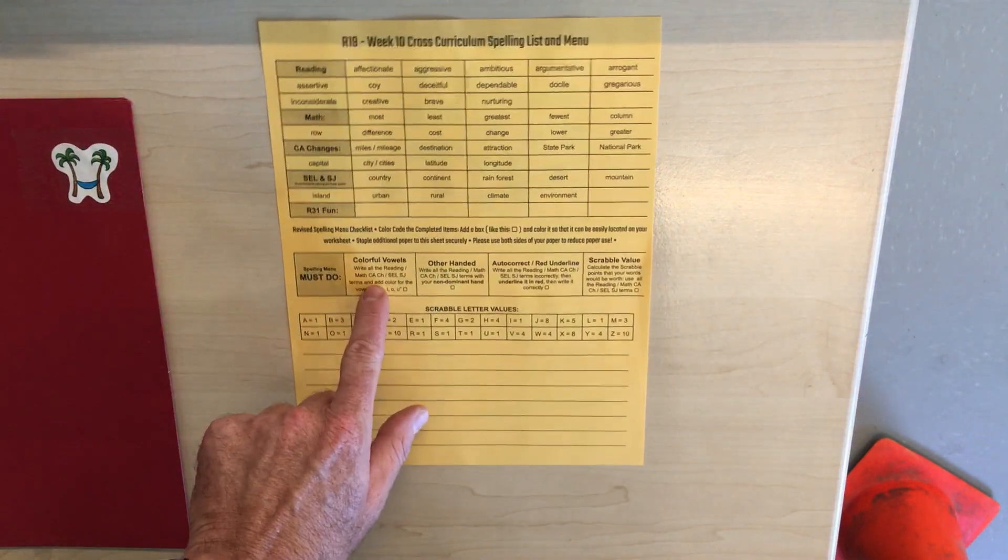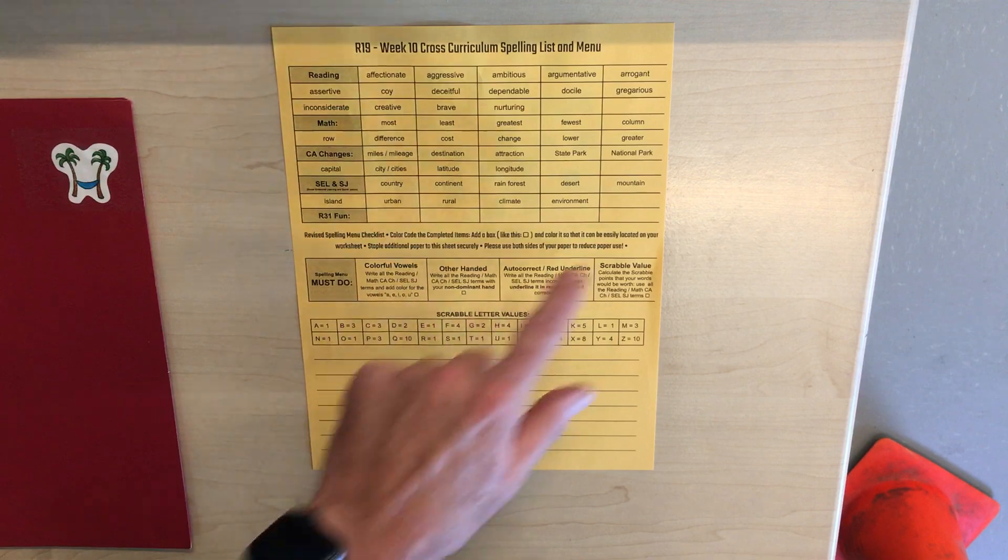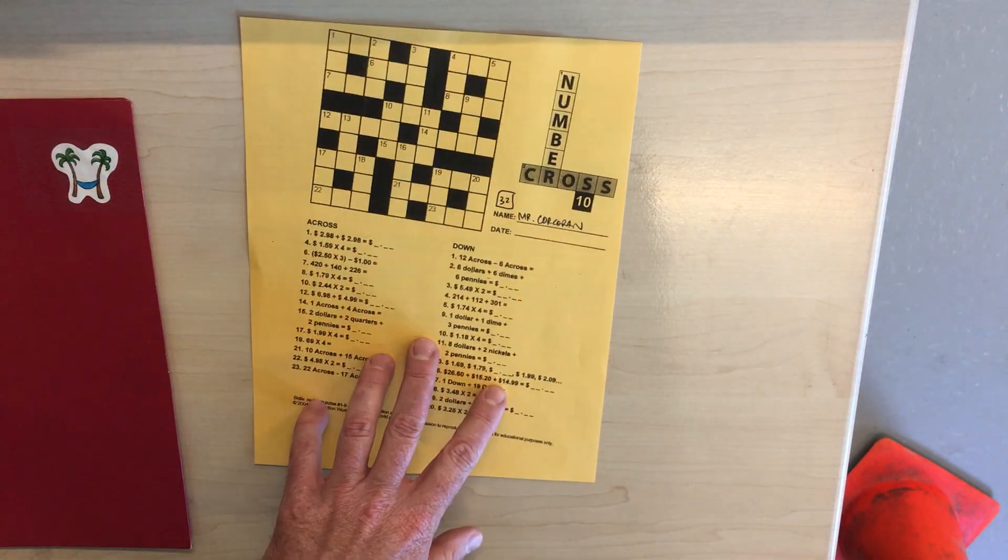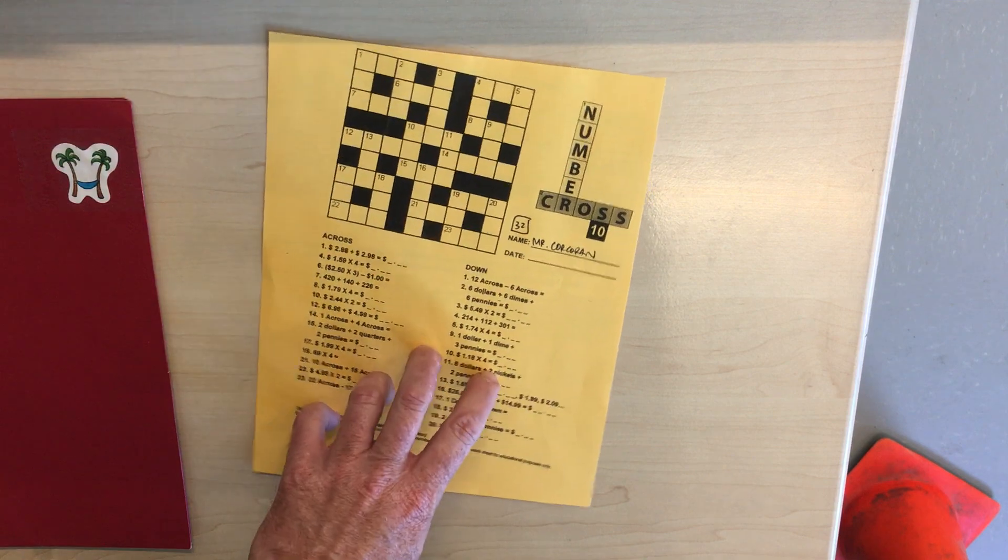On the back we have our everyday weekly spelling menu. The front is the cross puzzle. There's a video for how to do that.